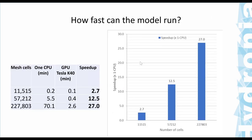Regarding computational speed: experiments last year with meshes of increasing cell counts achieved GPU speed-ups of up to 27 times faster than a single processor run, and more recently approaches close to 200 times faster for the MT model.